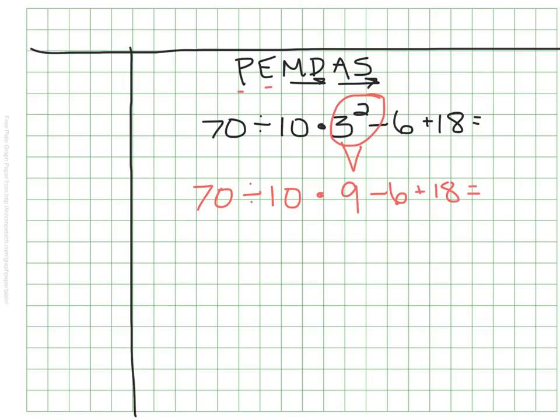Next, in my PEMDAS, I'm going to move on to the M and D, the multiply and divide. I actually see both multiplication and division here, so I need to remember that I deal with these on a first-come, first-served basis. So in this case, the division comes first, so I need to divide first. 70 divided by 10 is, of course, 7, and then I'll rewrite what is left.